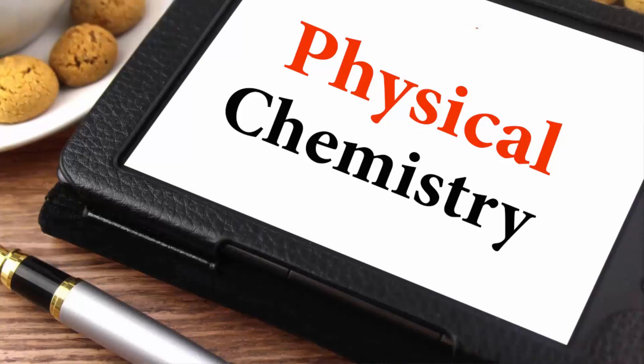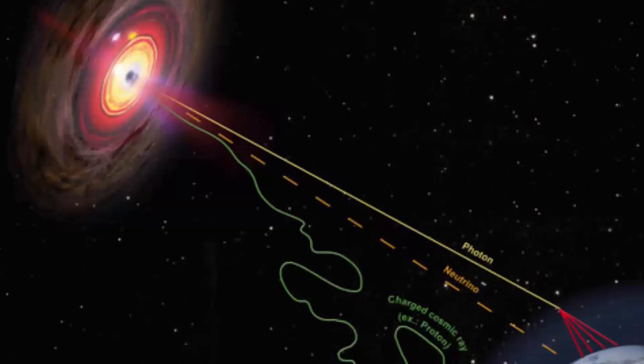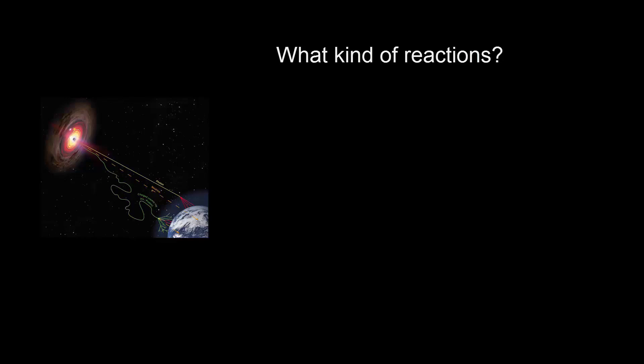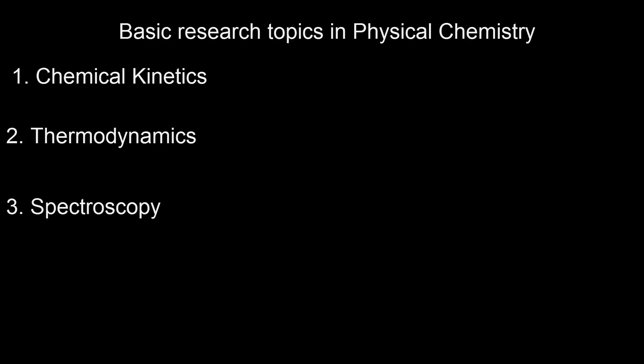Now let's talk about the derived branches of chemistry. The first derived branch is physical chemistry. When you study physical chemistry, you study the physics that is going on in chemical interactions. One basic example is studying the radiations coming from distant stars — we know many types of chemical reactions are happening in stars, and studying what kind of reactions and emissions come out falls under physical chemistry. Basic topics you can work on in physical chemistry are chemical kinetics, thermodynamics, spectroscopy, and electrochemistry.